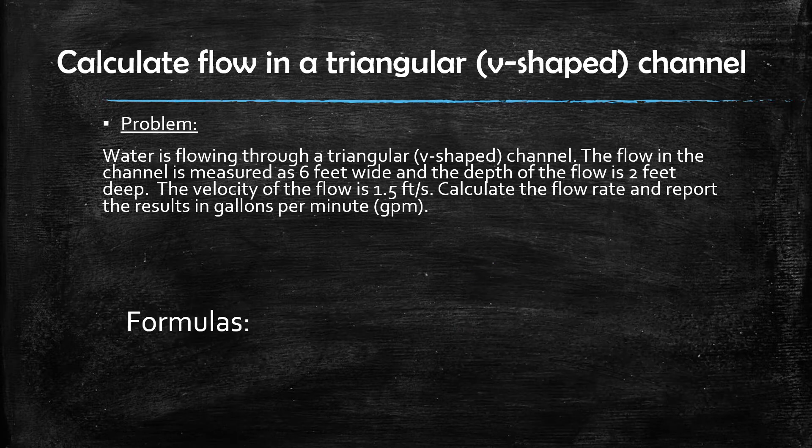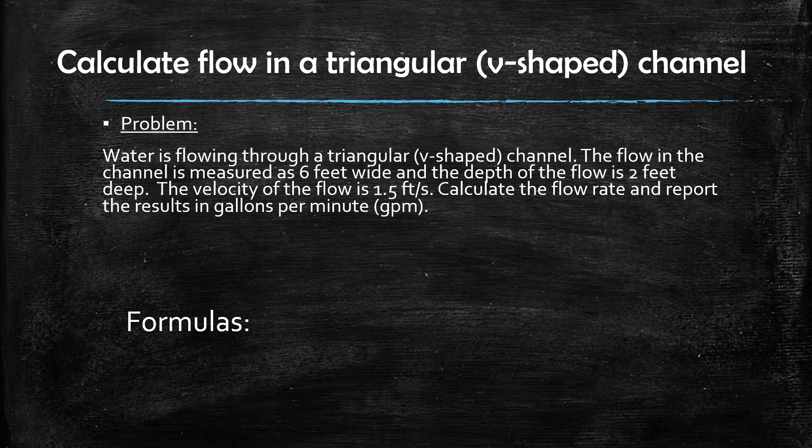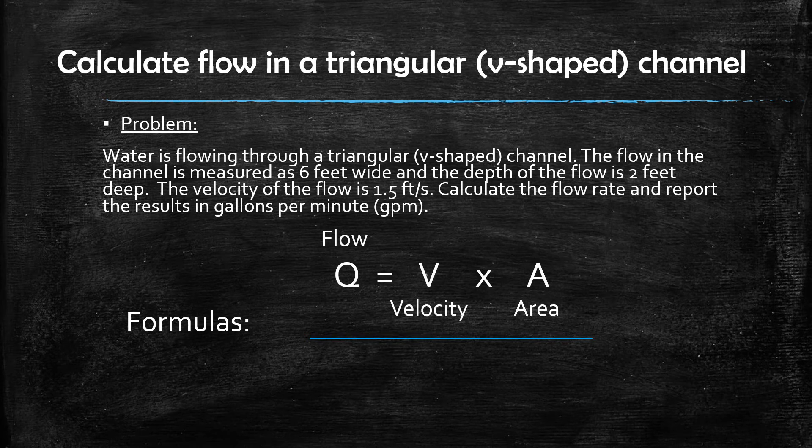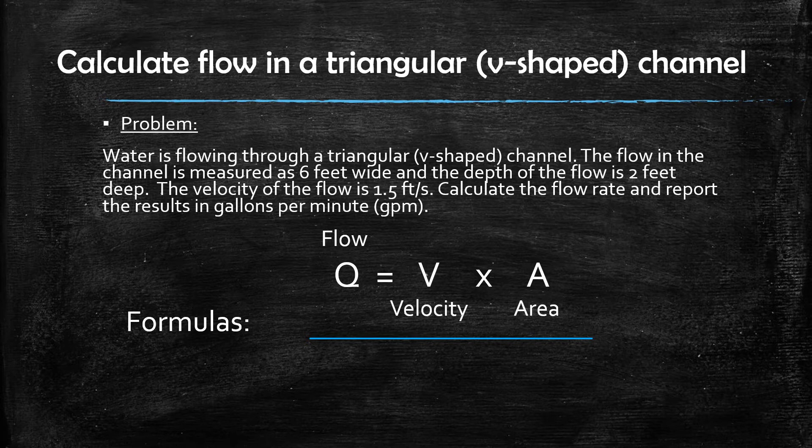All flow rate type problems like this one utilize the same formula for calculating flow rate. The formula is Q, which is the symbol for flow rate, is equal to the velocity of the flow multiplied by the cross-sectional area of the channel shape. In this case, it's a triangle.